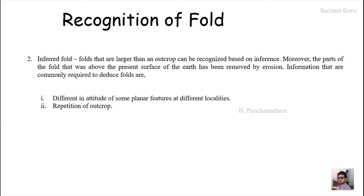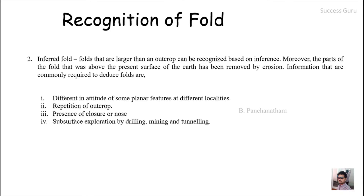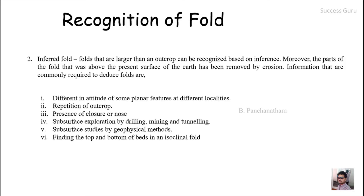Additional indicators include repetition of outcrops — especially symmetrical repetition — which can be used to recognize a fold. The presence of closure or nose is especially useful for plunging folds. Subsurface exploration by drilling, mining, and tunneling, as well as subsurface studies by geophysical methods, are also useful. Finding the top and bottom of a bed is especially important in the case of isoclinal folds.